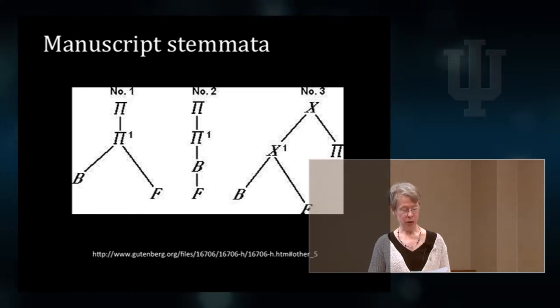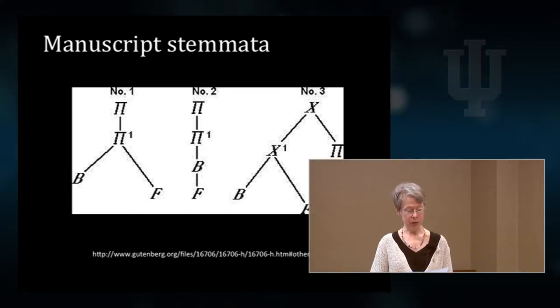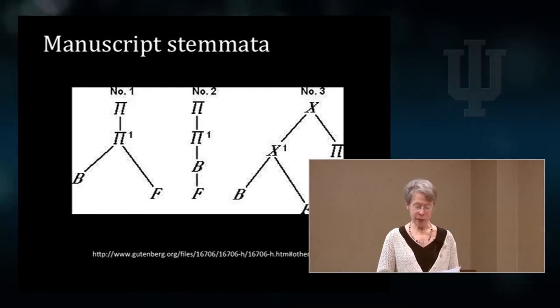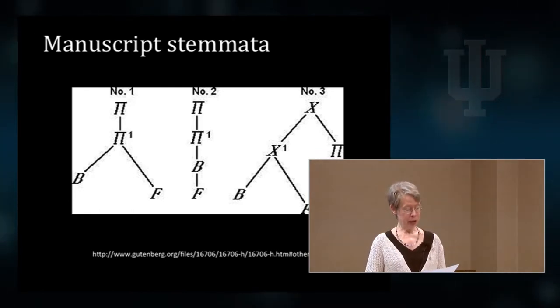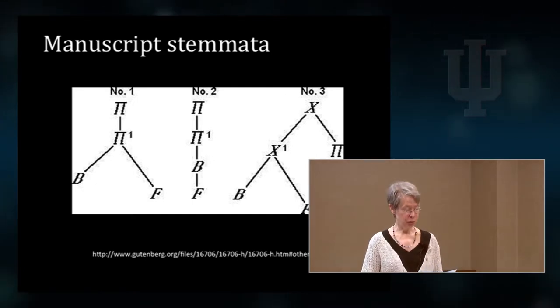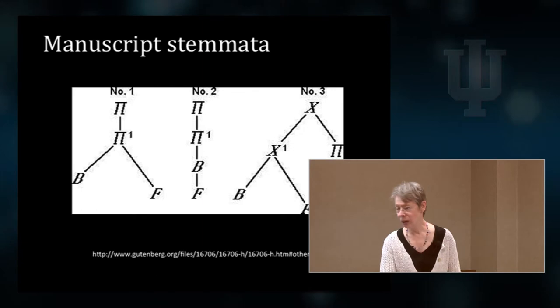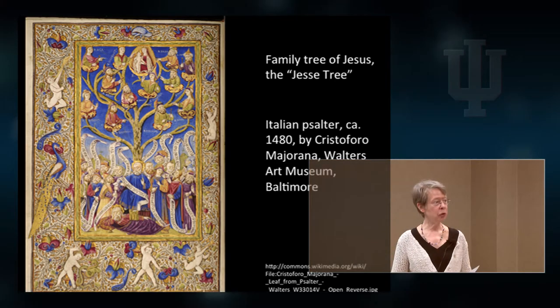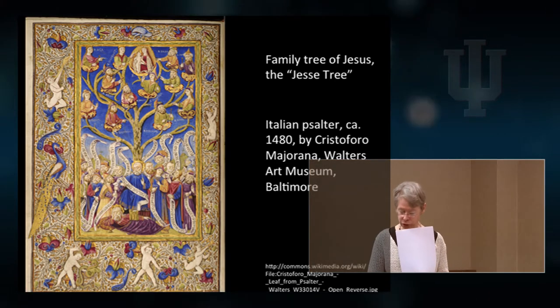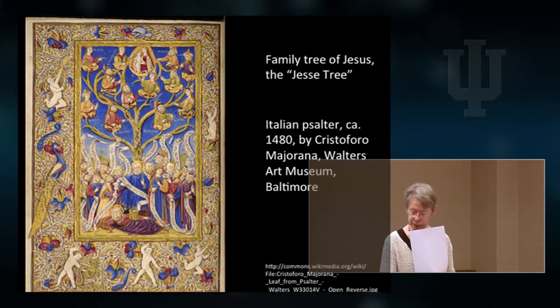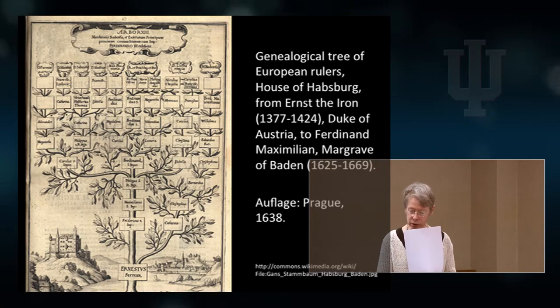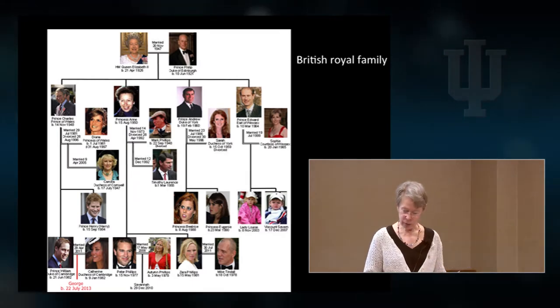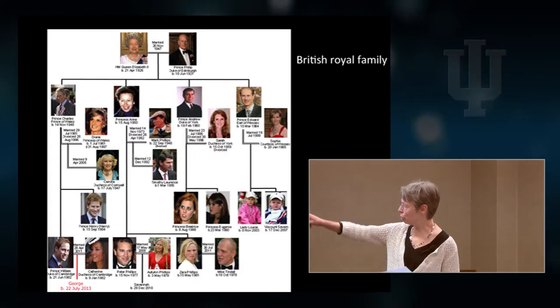There is speculation that Schleicher developed his approach to language not directly from biological scientists, but rather from his education as a classical philologist trained to create manuscript stemmata, according to the doctrine of shared errors, trying to find what the original manuscript might have looked like. His teacher, Friedrich Ritschl, worked also on human genealogy. So the family tree may be the most direct model for this form of representation that proved useful in both biological and humanistic inquiry. Here's the Jesse tree, the family tree of Jesus from the 15th century.